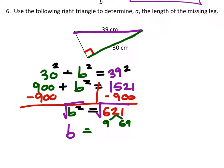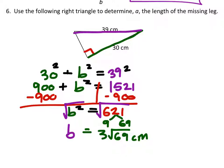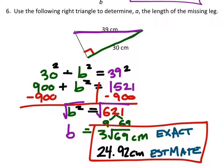And the square root of 9 is 3. So that would be 3 times the square root of 69 in centimeters. That would be the exact value. And the estimate to the nearest hundredth should come out to 24.92 centimeters. So these two would be our answers for this problem. Because it did ask for the exact and the estimated answers.